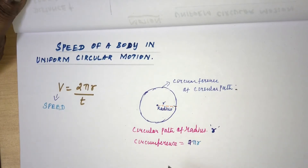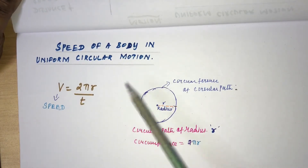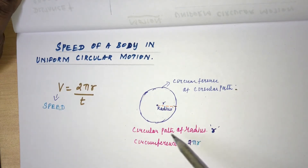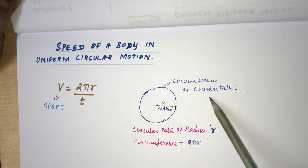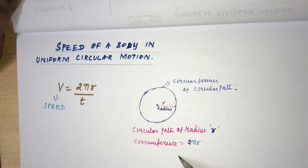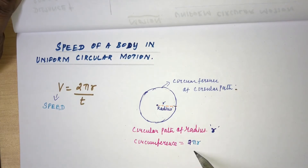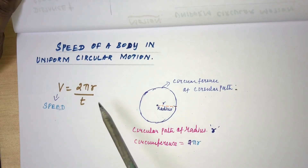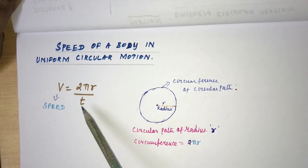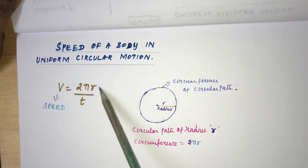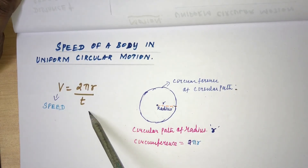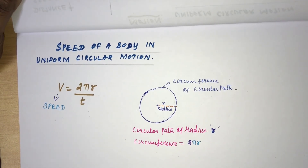Now we are going to see the speed of a body in uniform circular motion. Consider a circle where a body is making a movement, where r is the radius. The circumference of a circular path is equal to 2πr. Therefore, the speed can be calculated as 2πr divided by t — that is, the circumference divided by the time taken gives the speed or velocity of a body in uniform circular motion.